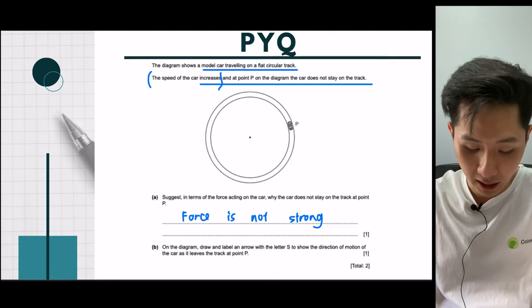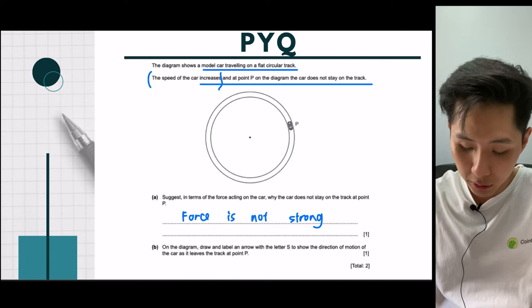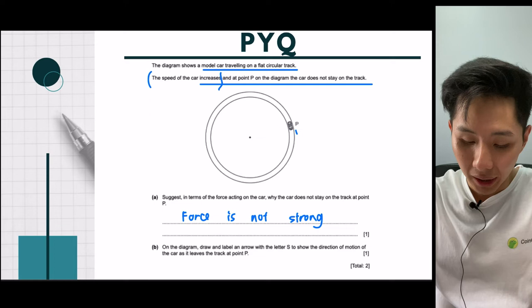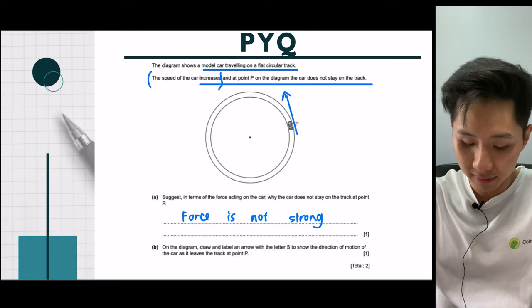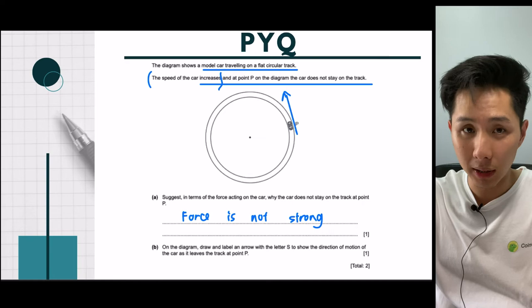For part B, draw an arrow showing the direction of motion: if the car at point P no longer stays in the circle, it will leave the track tangentially. That's the answer. So we've finished gravity, circular motion, and parachuting. Now let's proceed to how force, mass and acceleration relate to each other.